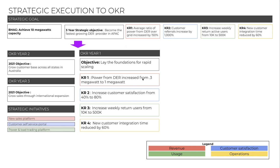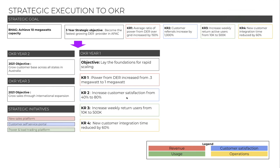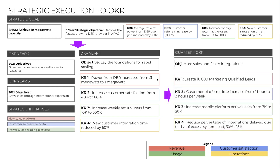There's a linkage between the multi-year OKR and the annual one. We're talking about increasing the distributed energy retailer base, and that maps quite closely. Increased weekly return users from 10K to 500K is very similar to the multi-year equivalent. For customer satisfaction, there might be a slightly different key result for this cycle, but everyone knows it's still about customer satisfaction.